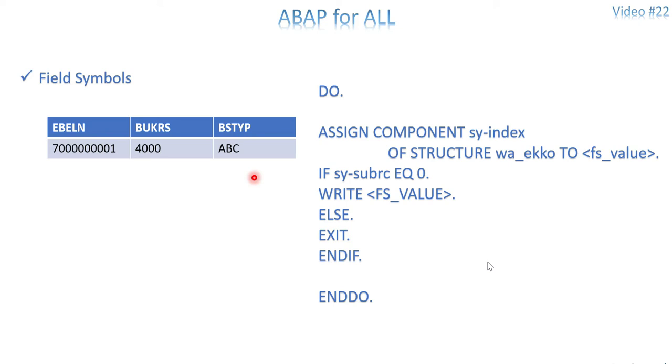ASSIGN COMPONENT basically lets you read the value of any field — it can be your work area or your internal table — whatever it is, you're able to read it.